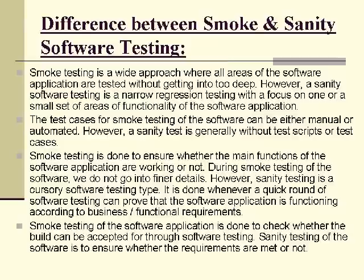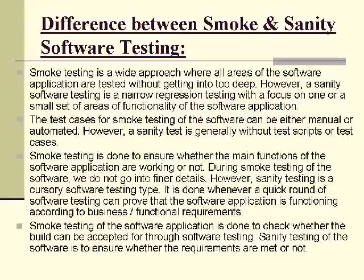Smoke testing is done to ensure whether the main functions of the software application are working or not, without going into finer details. Sanity testing is a cursory type of software testing done whenever a quick round of testing can prove that the software application is functioning according to business functional requirements.